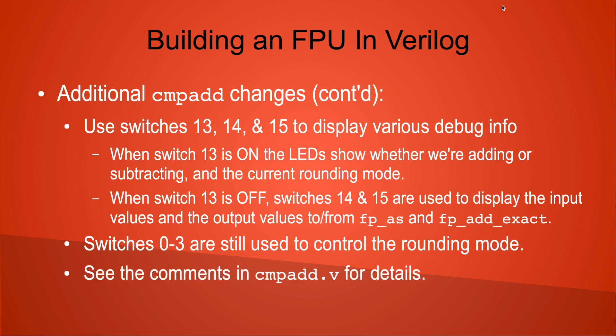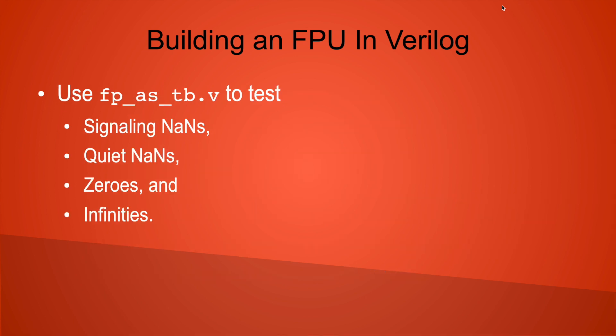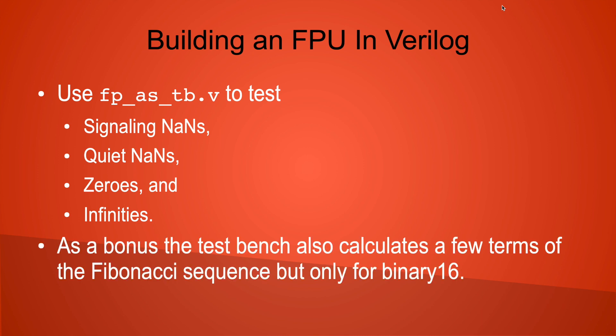You can find the details in the comments in the CMP_add.v file. While the FPGA harness is used to test all of the finite input values, the simulation testbench FP_AS_TB.v is used to test the exceptional cases: signaling NANs, quiet NANs, zeros, and infinities. As a bonus, the testbench also computes the first few values in the Fibonacci sequence, but only for the binary 16 values.